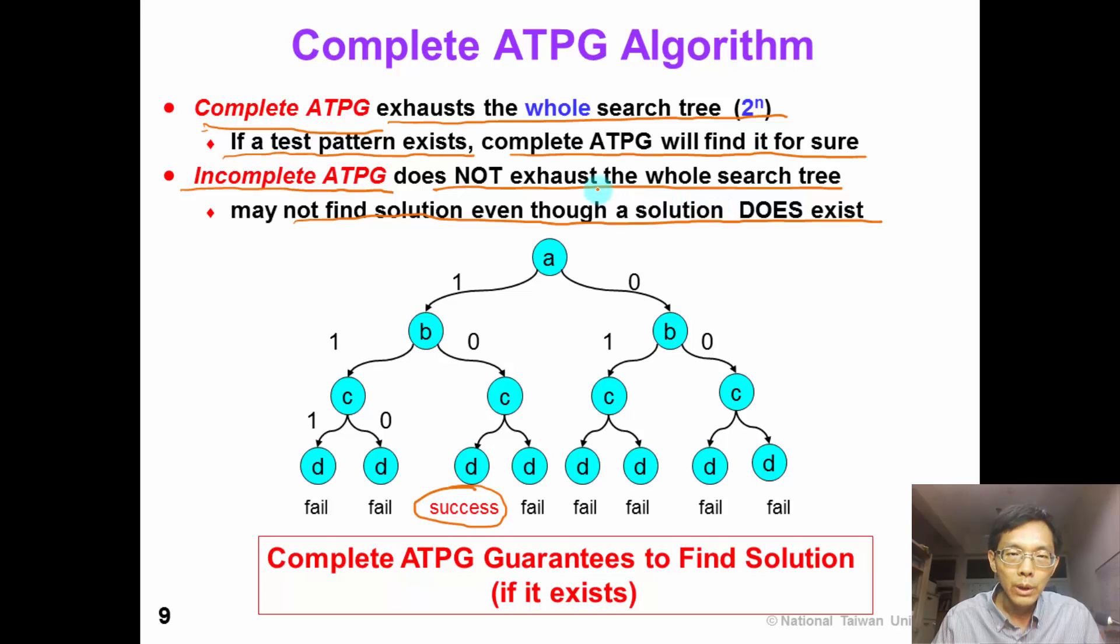For example, suppose that the incomplete ATPG does not search for this subtree. Then it cannot find the solution. Of course, complete ATPG consumes more CPU time than incomplete ATPG. So this is a tradeoff between CPU runtime and the fault coverage.